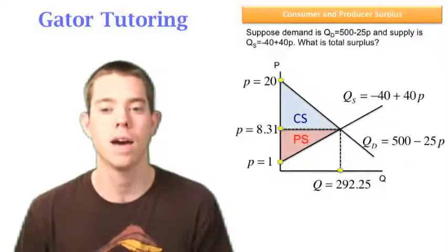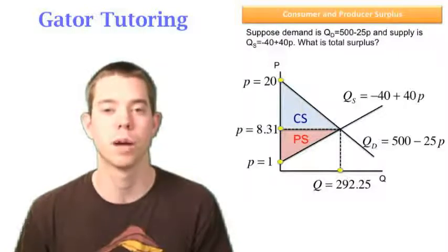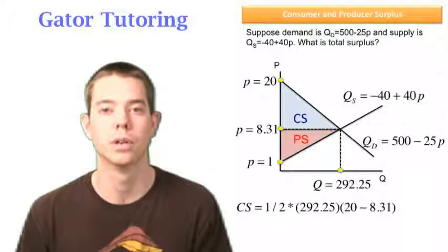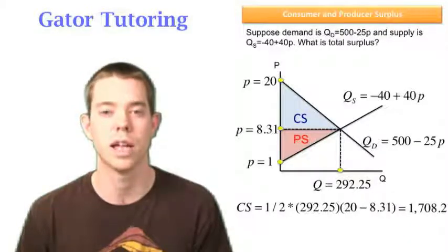So now I have all four of my points, and now I can solve for my producer surplus and my consumer surplus. Consumer surplus is one-half base times height, where the base is 292.25, and the height is the difference between 20 and 8.31. And when I solve that, I see consumer surplus is 1,708.2.